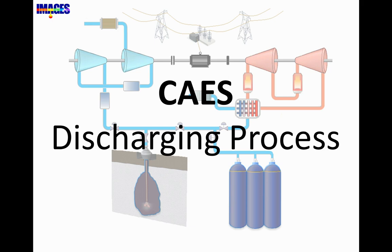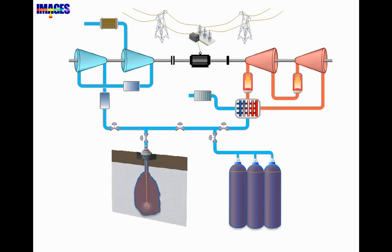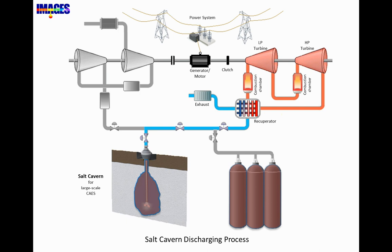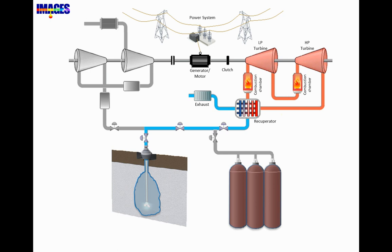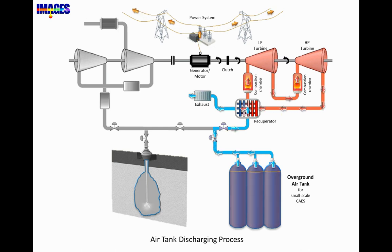Now let's take a look at the discharging process. When the power generation cannot meet the load demand, the stored compressed air is released and heated by a heat source, which can be the heat generated from the combustion of fossil fuel, or the heat recovered from the compression process. The compressed air energy is finally captured by the turbines. The waste heat from the system exhaust can be recycled by a recuperator unit. The same process takes place in the case of overground air tank discharge.